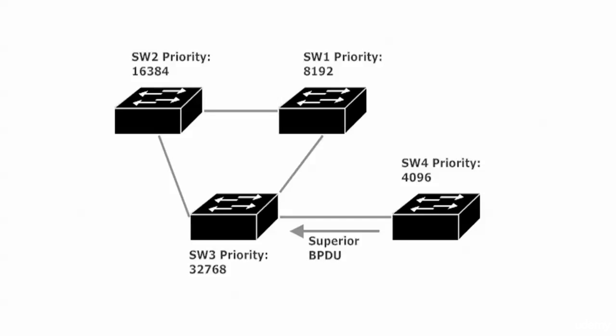Maybe that's fine, but if we went to the trouble of using the priority command or the root primary and root secondary commands to make Switch 1 the root, we had a good reason and don't want another switch coming online later and taking over that role. Also, Switch 4 could be what we call a rogue switch - a switch connected to our network that's not under our administrative control. That's a fancy way of saying the bad guys have gotten a switch in here. So maybe we want to guard the root role and make sure it stays with Switch 1 - that's what root guard is all about.